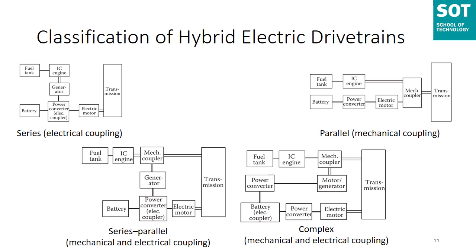Detailed configurations and components will be discussed in the next module. Note that in a hybrid electric vehicle there are two kinds of energy flowing in the drivetrain: mechanical and electrical. Adding two powers together or splitting one power into two at the power merging point always occurs with the same power type — either both electrical or both mechanical, not a mix. A more accurate definition of HEV architecture may be to describe the power coupling or decoupling features: an electrical coupling drivetrain, a mechanical coupling drivetrain, or a mechanical-electrical hybrid coupling drivetrain.